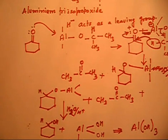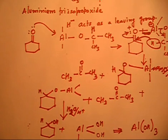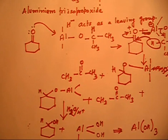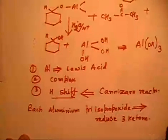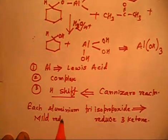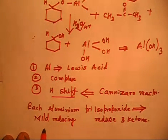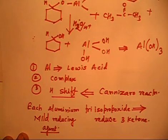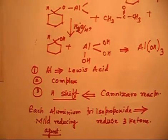This is essentially a reduction reaction in which a ketone is converted into an alcohol. Many reagents can do this — NaBH4, LiAlH4, or H2 — but aluminum tri-isopropoxide acts as a mild reducing agent because the isopropoxide groups are sterically hindered. So if you want to reduce only a ketone group without reducing a carbon–carbon double bond present in the same molecule, you can use this reagent.